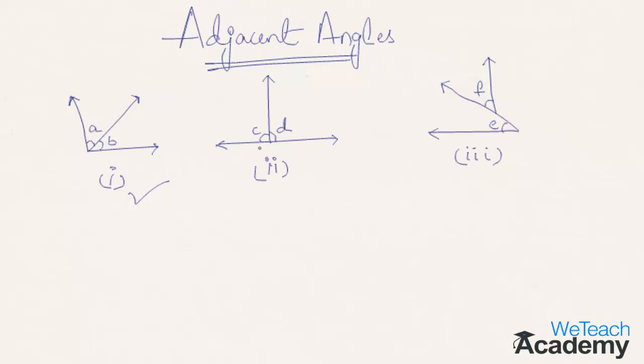Let us go with the second example. Here angle C and angle D are also called adjacent angles since they have a common vertex that is this one, and a common arm which is here.